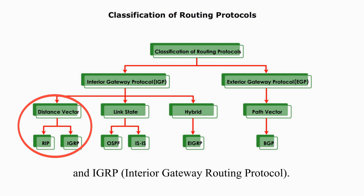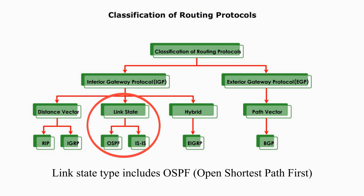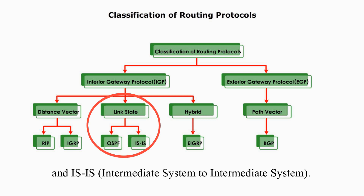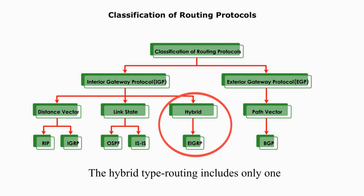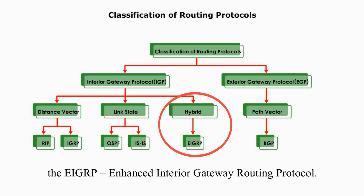and IGRP, Interior Gateway Routing Protocol. Link state type includes OSPF, Open Shortest Path First, and IS-IS, Intermediate System to Intermediate System. The hybrid type of routing includes only one, EIGRP, Enhanced Interior Gateway Routing Protocol.